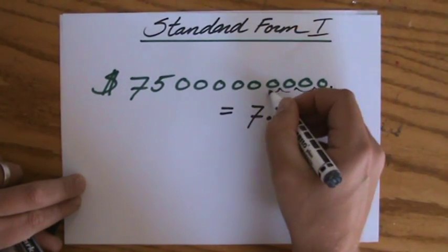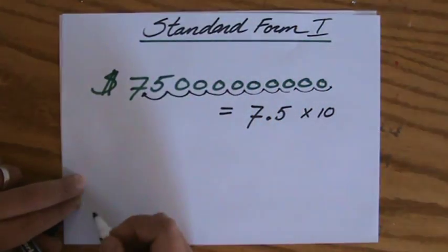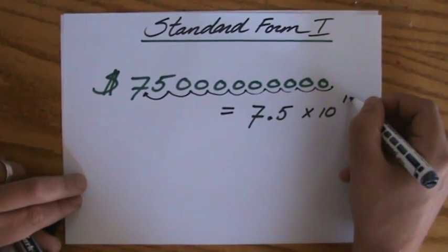So how many places did it move? One, two, three, four, five, six, seven, eight, nine. It moved 10 places. So 7.5 times 10 to the power of 10.